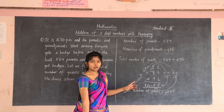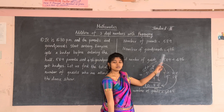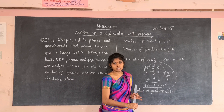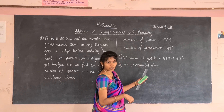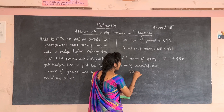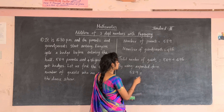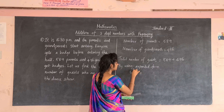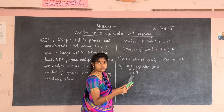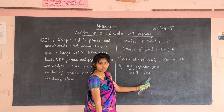Another way is to add the numbers using expanded form. First expand 589: five is in the hundreds place so write 500; eight is in the tens place so write 80; nine is in the ones place so write 9. So 589 expanded is 500 + 80 + 9.